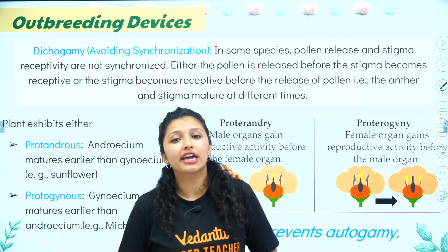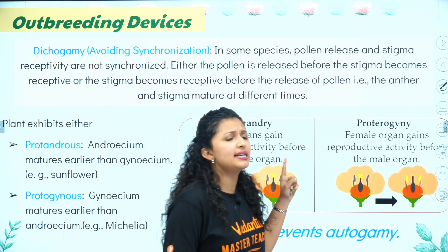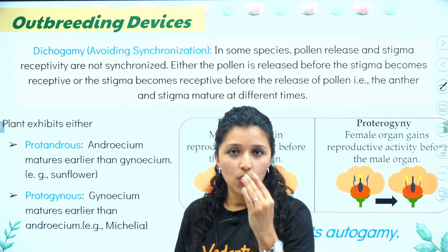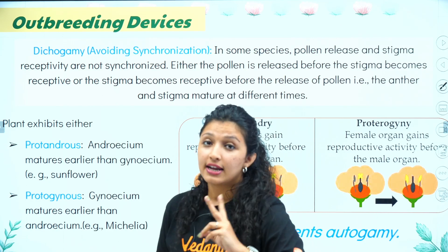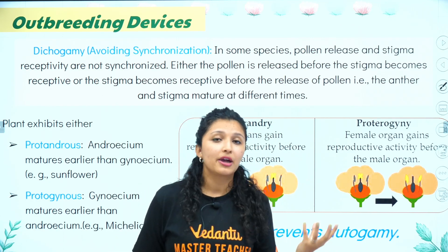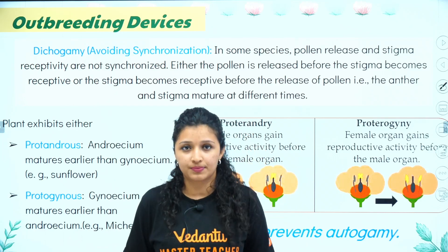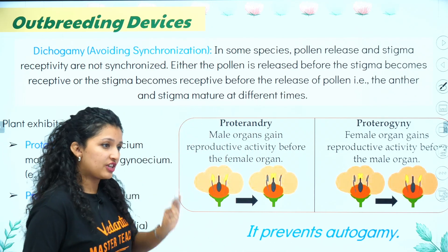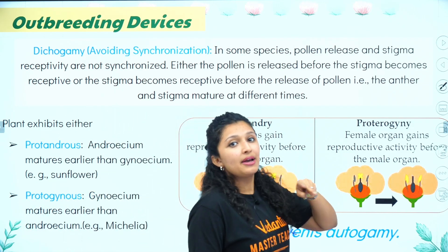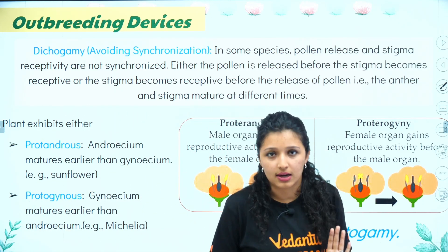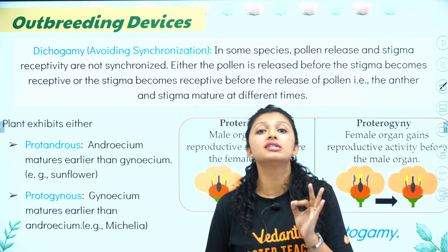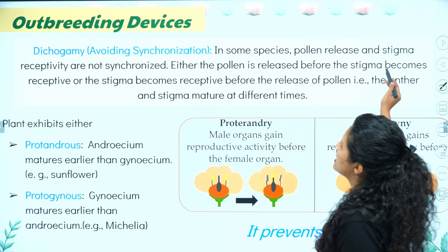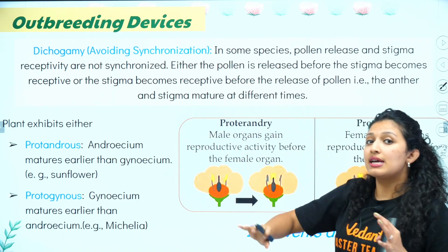Dicogamy is the mechanism to avoid synchronization. Self-pollination needs to be avoided for two reasons: one, physically the anther and stigma are too close; two, they mature at the same time. So Dicogamy stops synchrony — pollen release and stigma receptivity are not synchronized.